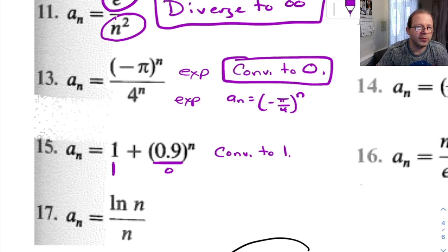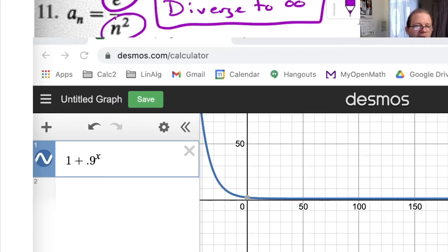You know, if you want to, you can look at this on Desmos. I've already graphed it here. If you graph 1 plus 0.9 to the x, you look at what happens to this graph. As we go over further and further, the y coordinate is approaching 1. In fact, by the time we get up here to like, yeah, once we're above 70, Desmos can't even tell the difference in the actual y coordinate in the 1. And you can do this on all of these.